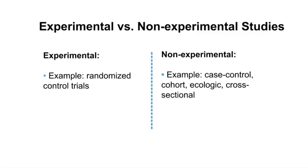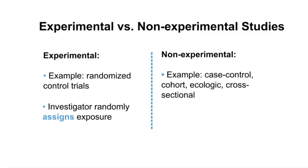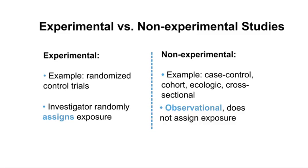An important difference between experimental and non-experimental studies is the randomly assigned exposure. Randomization is important because it minimizes differences in key characteristics between the group that gets the exposure and the group that does not. But it's not ethical to randomly expose people to serious hazards such as radiation, toxic chemicals, or inadequate health care. Therefore, experimental study designs don't work for everything, and researchers use observational studies in these situations.